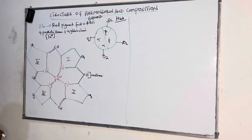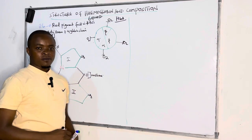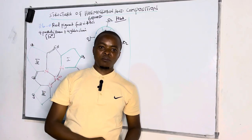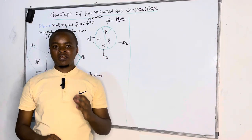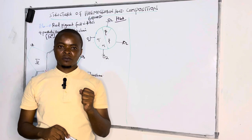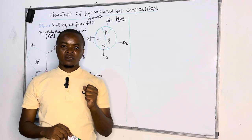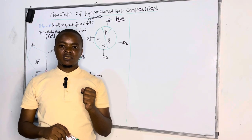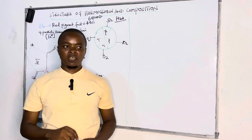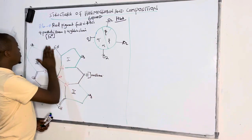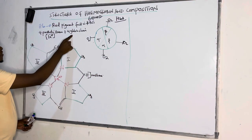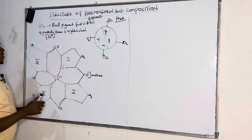So if asked how many molecules of oxygen are carried by one hemoglobin, the answer is four. There are four molecules of oxygen, but in terms of atoms there are eight atoms of oxygen carried by one hemoglobin, because one hemoglobin has four heme groups and four globin chains.